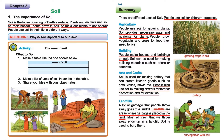Another use of soil is landfills. A lot of garbage that people throw away goes to a landfill. Landfills are areas where garbage is placed in the land. Most of the trash that we throw away ends up in a landfill and soil is used to bury it. The city corporation collects garbage and takes it to a certain place, filling that area day by day. After some days we need to bury that garbage because it creates a bad smell. That's why we bury it with the help of land — this is why it's known as a landfill.